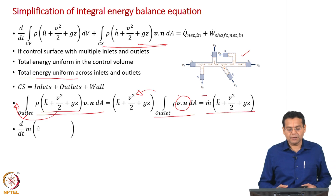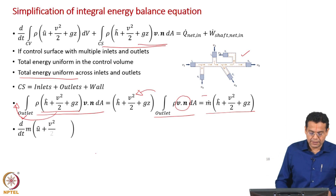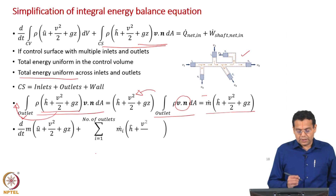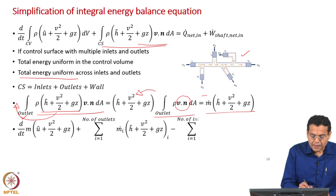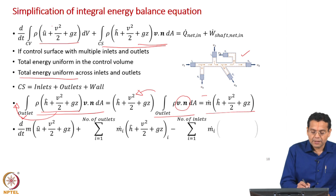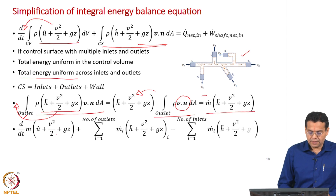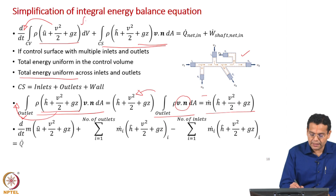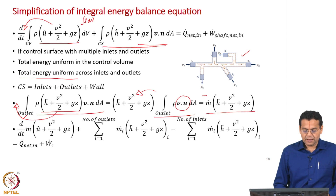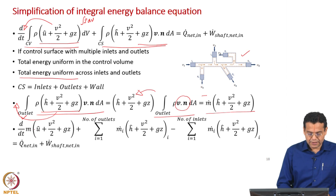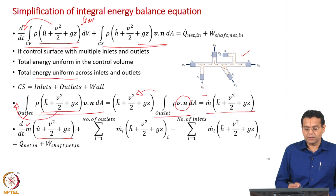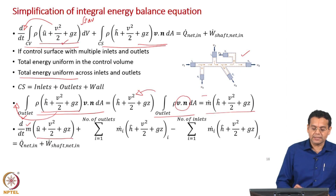Using this, we simplify the integral energy balance equation. For the transient term, we take the total energy term outside the integral, and what remains is ∫ρ dV, which is mass. So the transient term simplifies to mass times the sum of the energy terms.